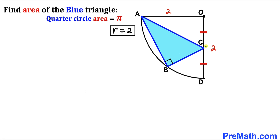Now let's make an observation. Since C is the midpoint, OC is going to be half of this radius, so OC equals 1, and likewise CD equals 1 as well.